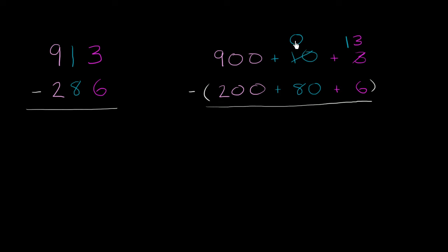What do I do? Well, luckily, I can go to the 100's place. I could take 100 from 900. So then I'm left with 800. And I could give it to the 10's place. So if I give it to the 10's place, then this is going to be 100. So then this is going to be 100 right over here.